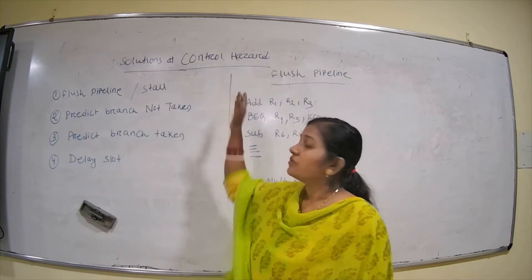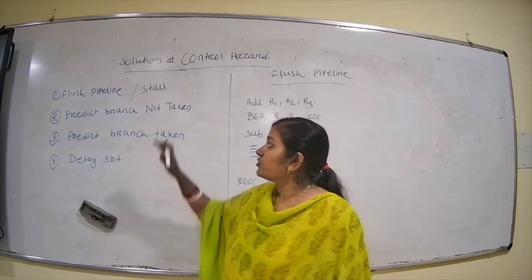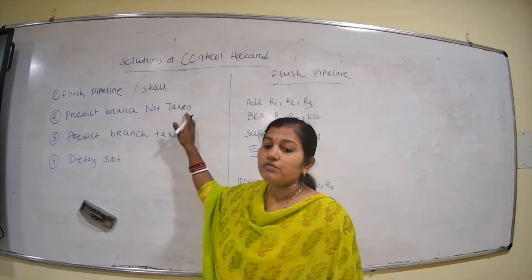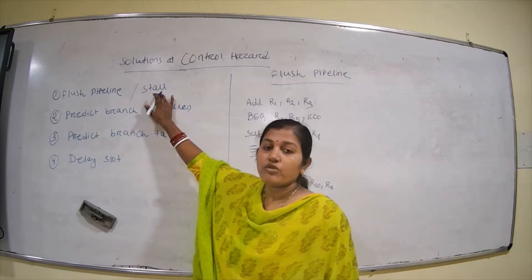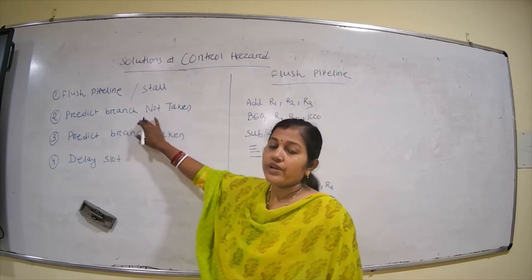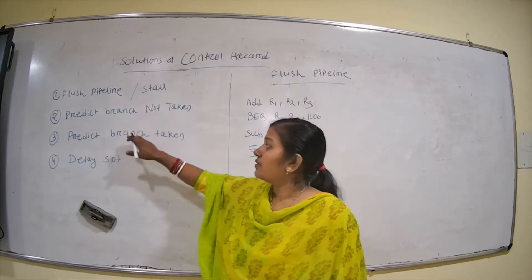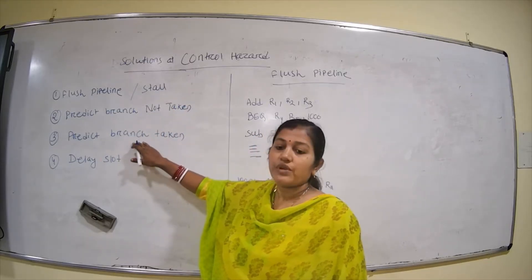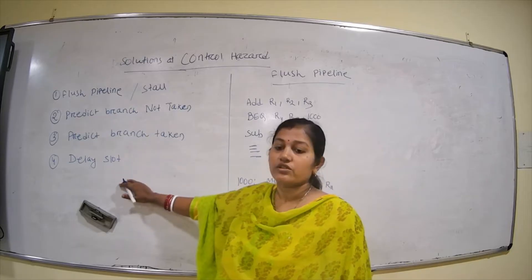There are four solutions to the control hazard. First, stalling the pipeline. Second, predict branch not taken. Third, predict branch taken. Fourth, delayed branch slot.